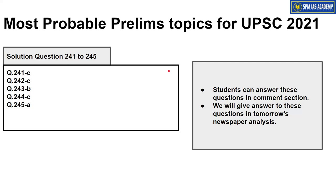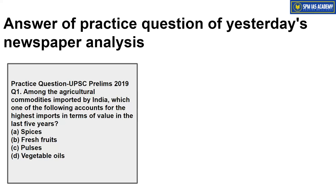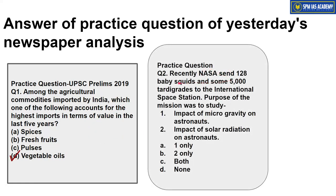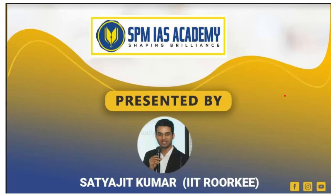This is the answer session for questions 241 to 245 given in yesterday's newspaper analysis. Today's questions can be attempted by students and answers submitted in the comment section — answers will be sent in tomorrow's newspaper analysis. The answer for the agricultural commodity question is option D — vegetable oils. Regarding NASA sending 128 baby squids and 5000 tardigrades — the purpose was studying the impact of microgravity and solar radiation on astronauts; both statements are correct, so the correct answer is option C. That's all from our side for today, thanks for watching.